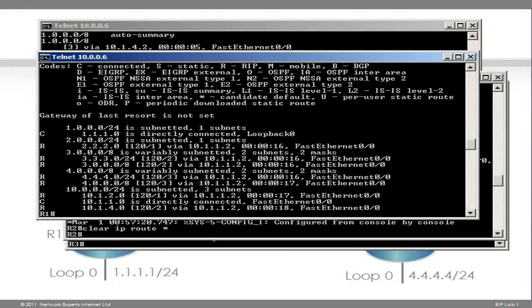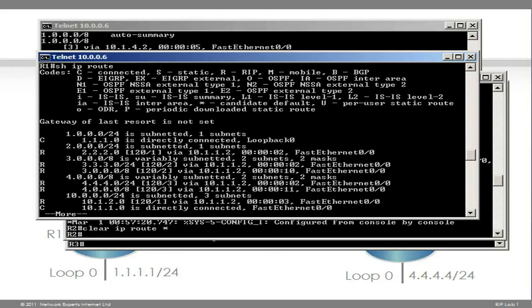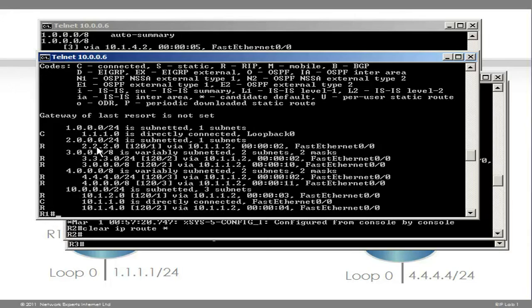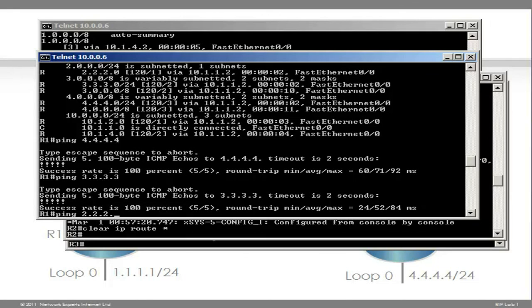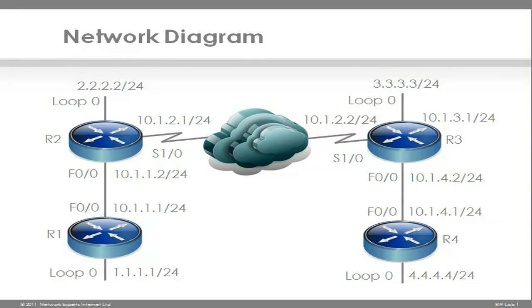After the tables update, we won't have the summarized routes in the routing table. On router 1 we are only receiving the specific network, not the summary network. Sending of traffic will not be affected in this topology. In other videos I'll show you issues related to automatic summarization and why you want to turn it off. I will also show you how to configure variable length subnet masks rather than having a single subnet mask on all networks — in this example all networks have a /24 mask, which might not be ideal for some topologies.